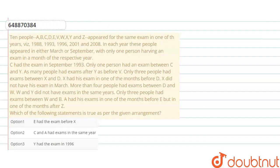Welcome to Doubtnet. Our question is 10 people A, B, C, D, E, W, X, Y and Z appear for the same exam in one of the years. In each year, these people appeared in either March or September with only one person having an exam in a month of the respective year. Question में 10 दिए हैं, different year में exam appear करते हैं and हमें 2 months given हैं, March and September. लिख लेते हैं year, month and person.